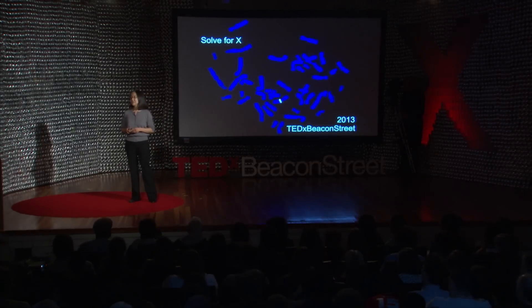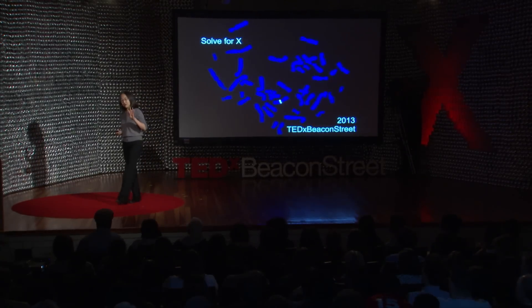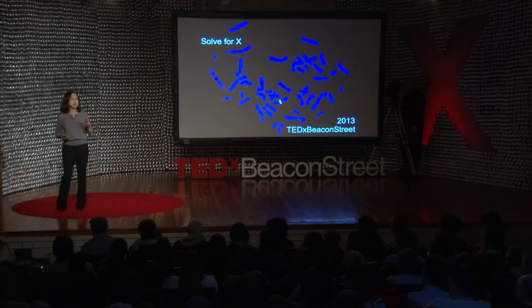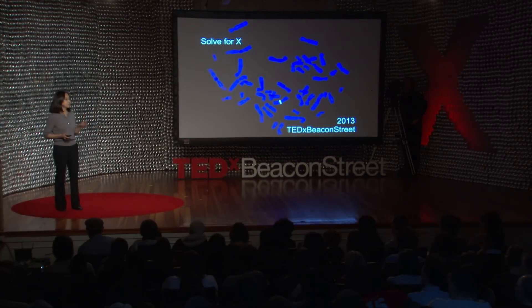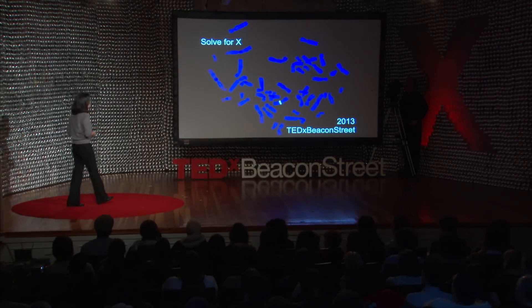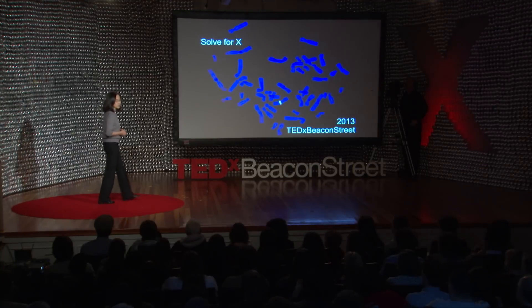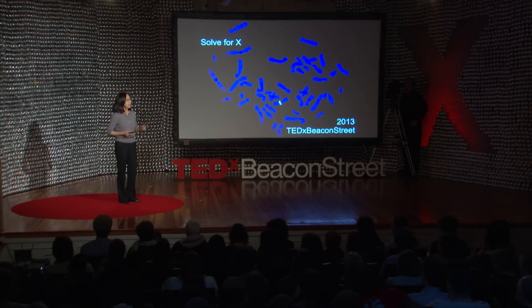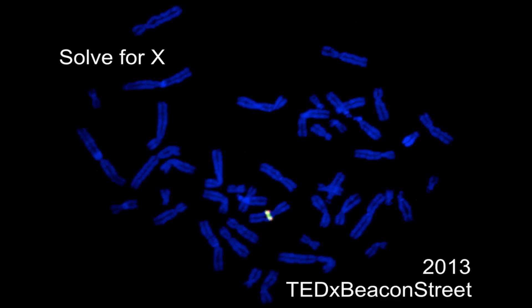I'd like to tell you today about four categories of genetic diseases — they're not the only categories, but they are major ones. To do that, I'd like to start by introducing you to chromosomes, which contain the majority of your genetic material. The important thing for us today is that except for the X and Y chromosomes, they come in pairs.